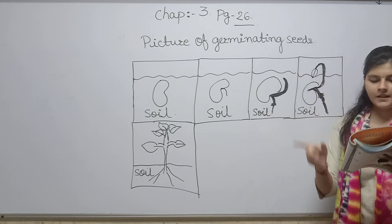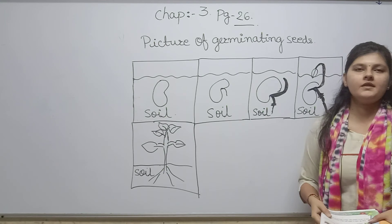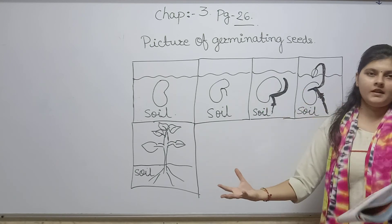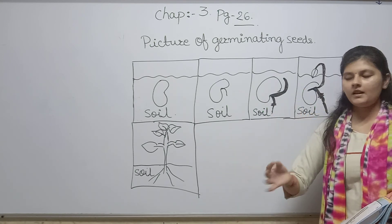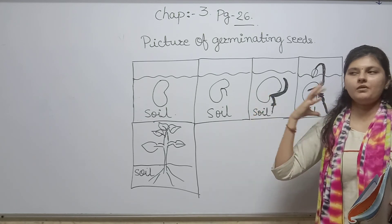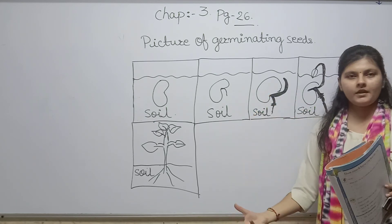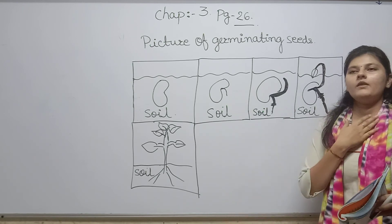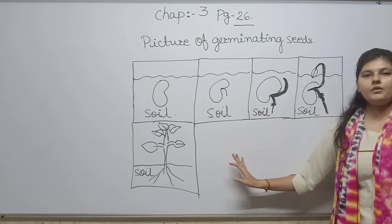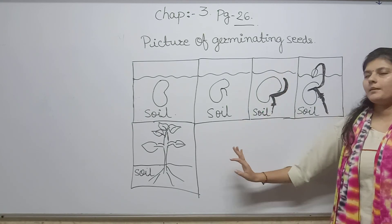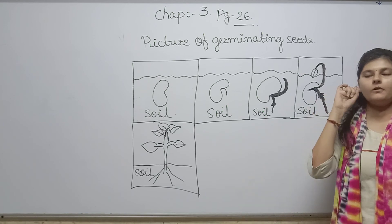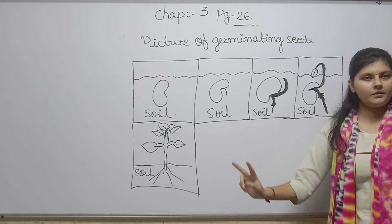The next question is: if there were no seeds in the world, we would not get rain and we cannot get oxygen. So this is the end of chapter number three. The main topics we discussed are seed germination and monocot and dicot seeds.